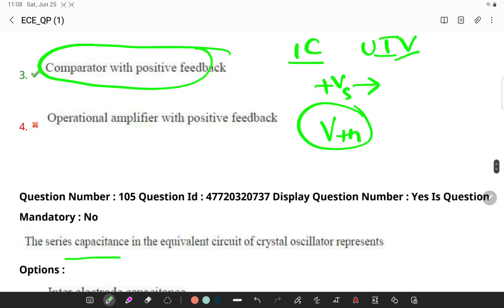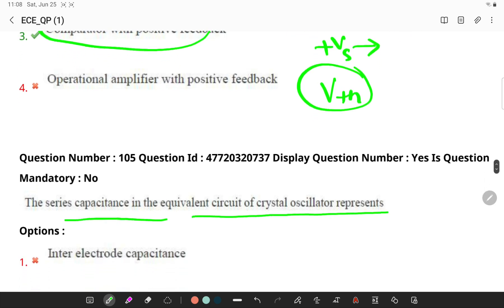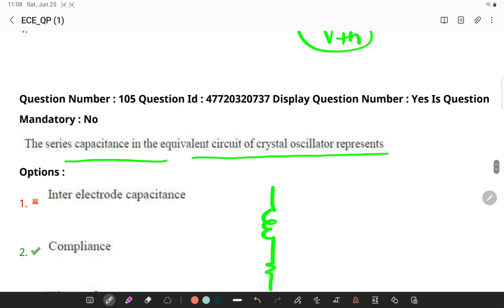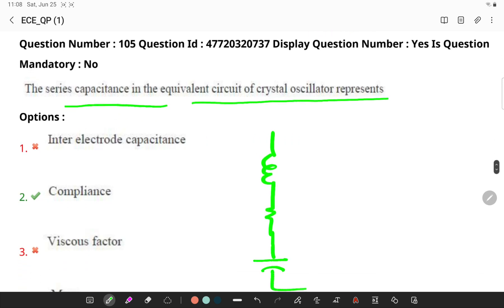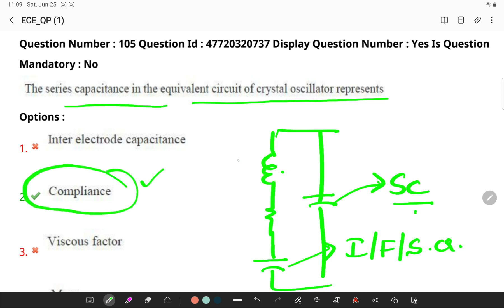The series capacitance in equivalent circuit of a crystal oscillator represents the equivalent electrical circuit - remember R, L, C. The capacitor will be representing the inertia, friction and stiffness of the crystal and the parallel capacitance will be representing the self-capacitance of the crystal. Here, compliance is an answer which suits with the series capacitance.